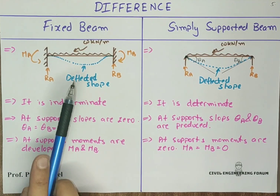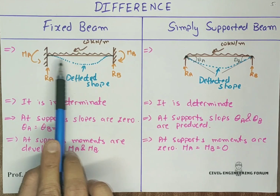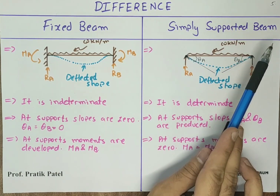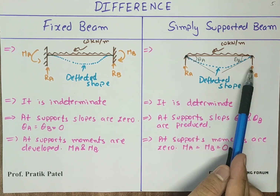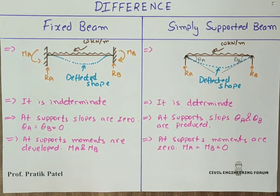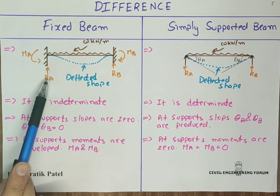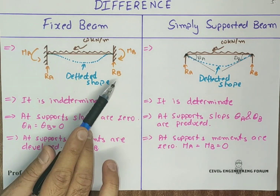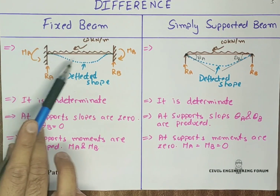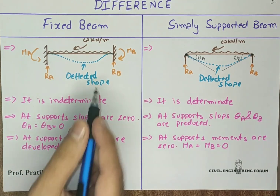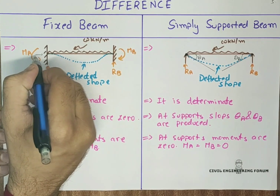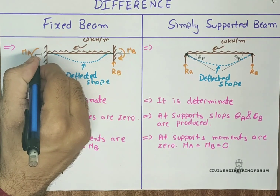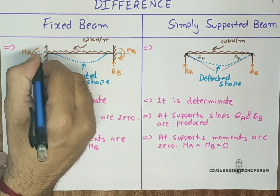This figure shows a fixed beam with fixed supports, and this is a simply supported beam with simple supports. For the fixed beam, there are reactions at A and B, and moments at point A and point B. If horizontal loading is applied, a horizontal reaction can also be produced.